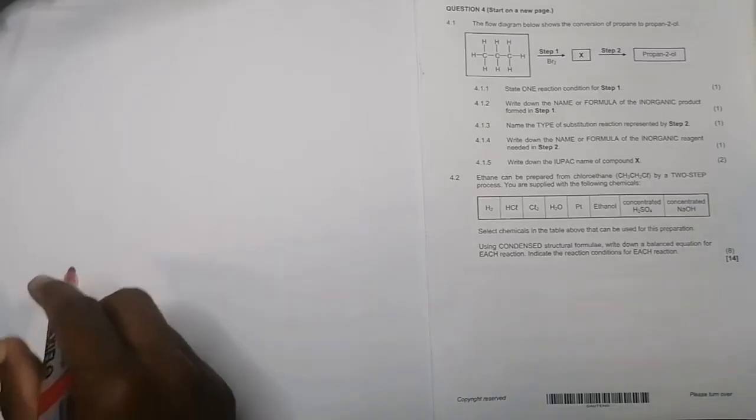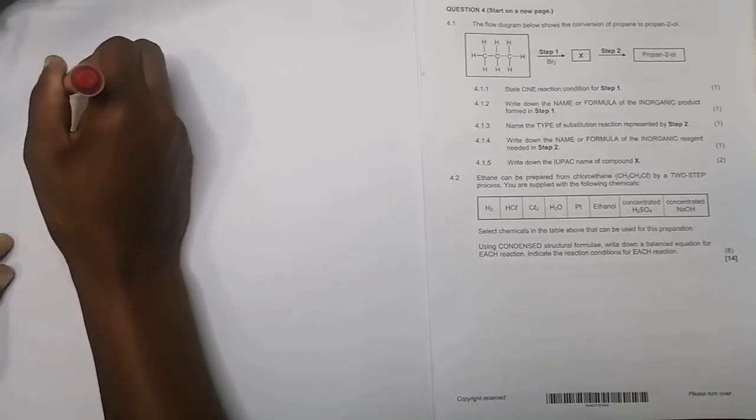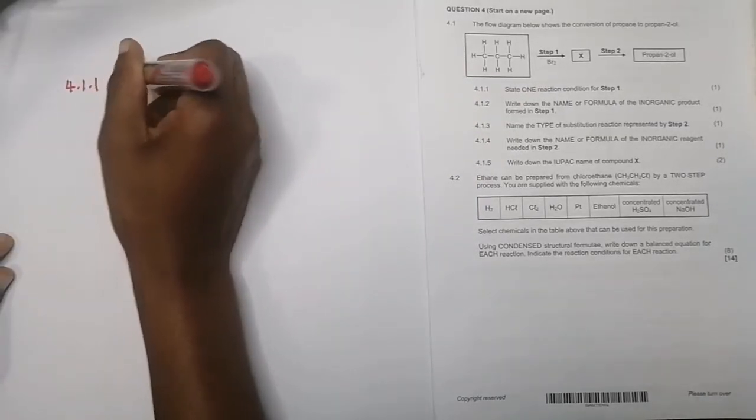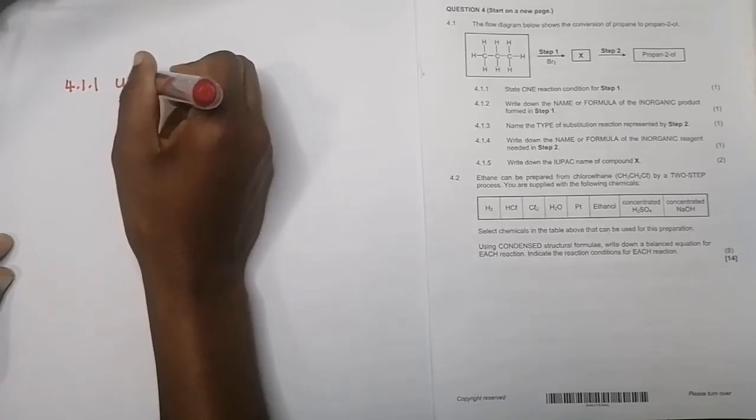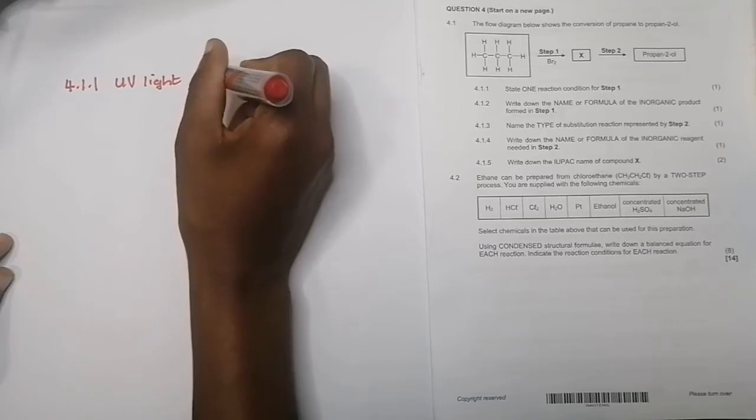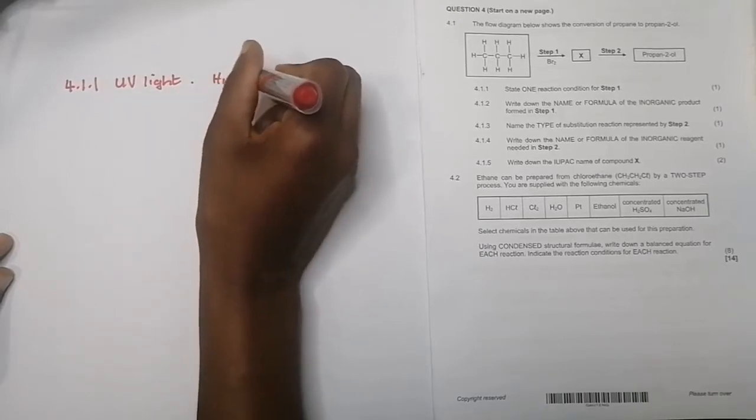Remember in step one you're looking at an alkane there and you want it to react with bromine. Alkanes are saturated, which means they're very difficult to get to react. What you need to do is put UV light. These guys would tend to react in UV light or you can say high temperatures. So the reaction condition there, you can either say UV light or you can say high temperatures.